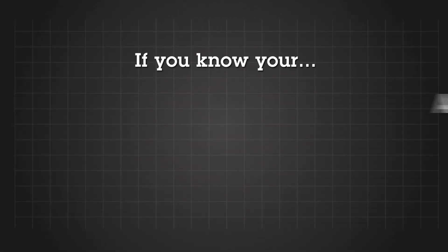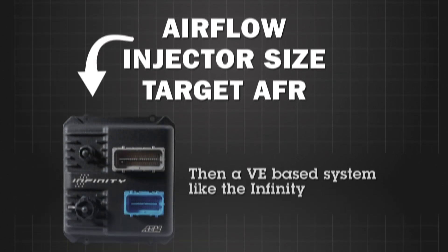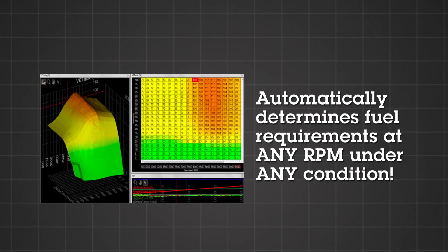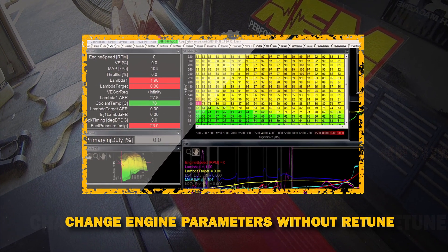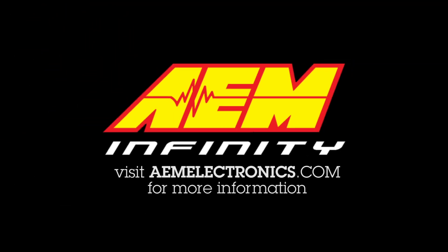Unlike pulse width based systems, VE systems use airflow as their primary foundation. If you know your airflow, injector size, and target AFR, then a VE based system like the Infinity will automatically determine how much fuel is required at any RPM under any condition. What this means is that once you set that VE table, you can forget about having to make fuel corrections. This will speed up your tuning time and lead to a host of other tuning advantages.